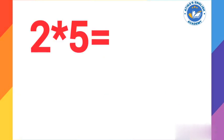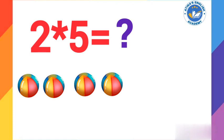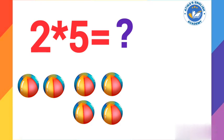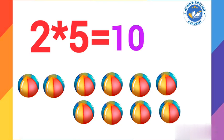2 times 5 equals what? Let us count: 2, 3, 4, 5, 6, 7, 8, 9, 10. 2 times 5 equals 10.